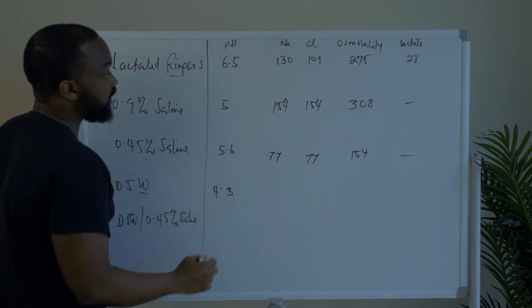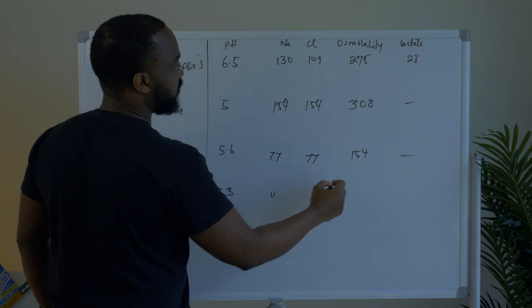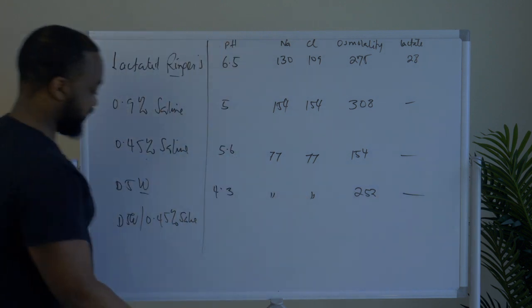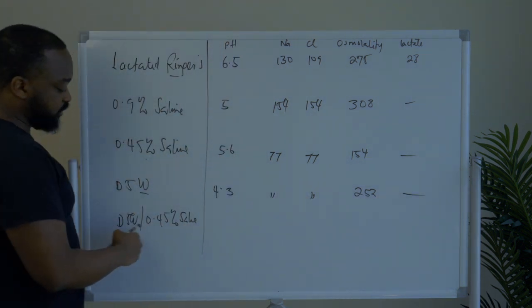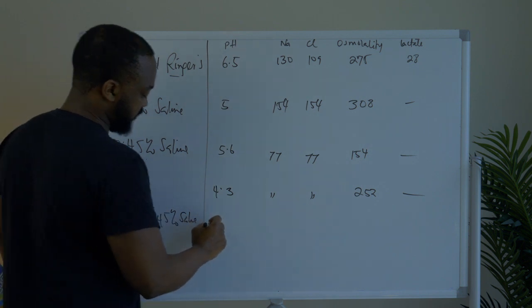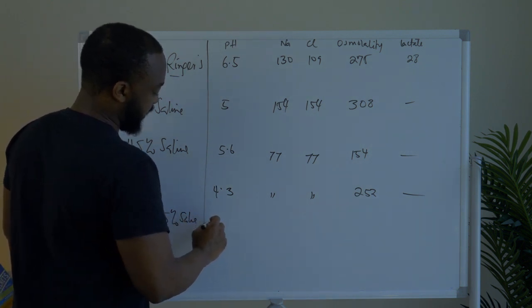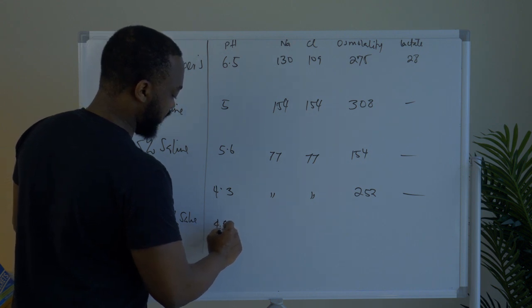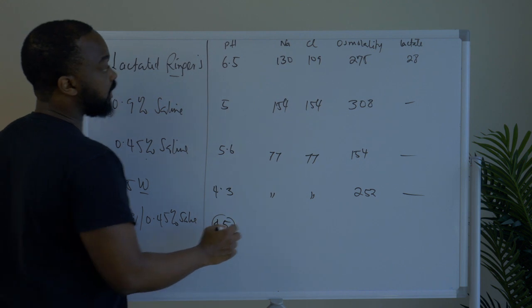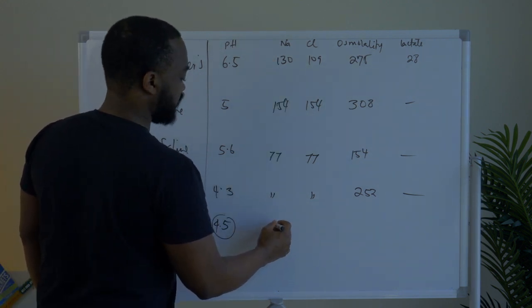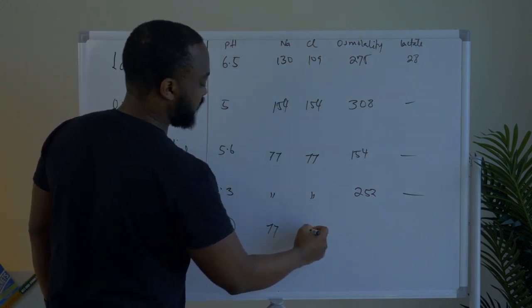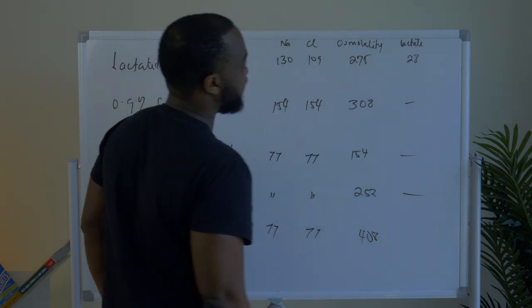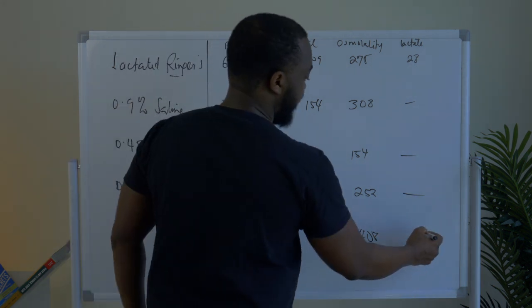With D5W, the pH is around 4.3, it has no sodium, no chloride, osmolality is around 252, and no lactate. With D5W plus 0.45% saline, the pH is around 4.5, sodium is 77, chloride is 77, osmolality is around 408, and it also has no lactate.